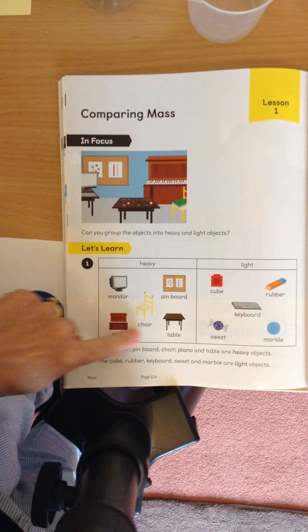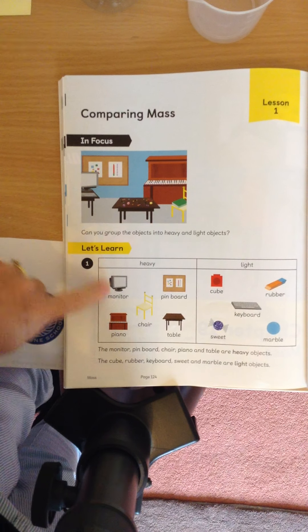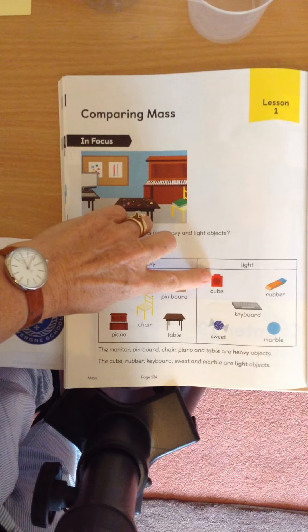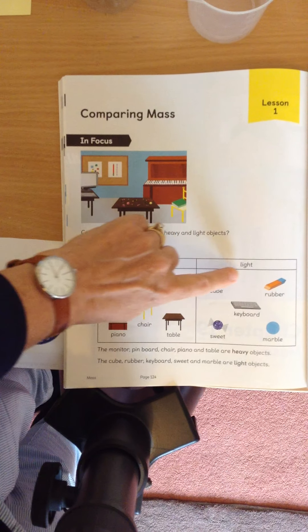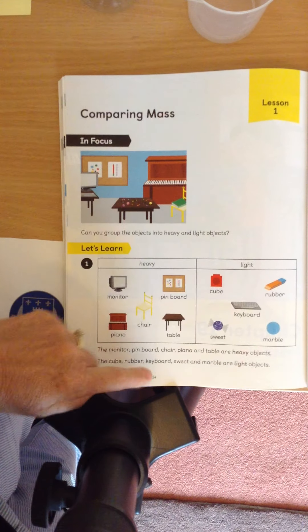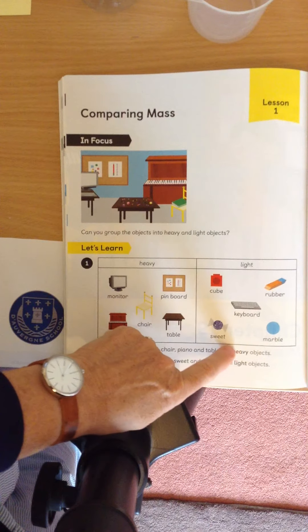These are all heavy objects. And then we're looking at these objects here, the cube, the little linking cube, a rubber, the keyboard, a suite, and a marble. These are all light objects. So, the two important words today are heavy and light.